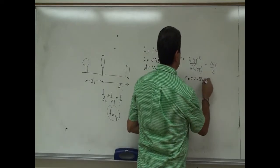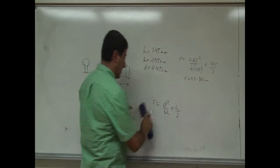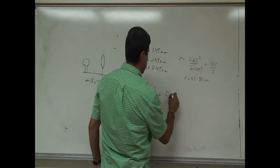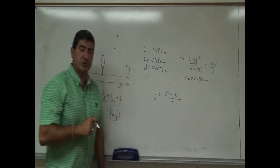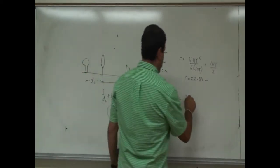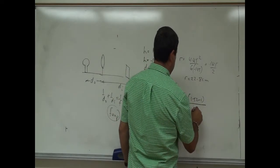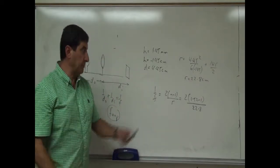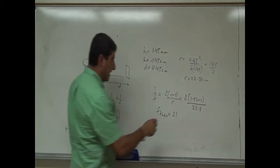Then I use 1 over F theoretical equals 2 times (N minus 1) over R. Since this glass is crown glass, the index of refraction is 1.52. So we have 2 times (1.52 minus 1) over 22.8 cm. Keeping everything in centimeters, F theoretical comes out to approximately 21.9 centimeters.